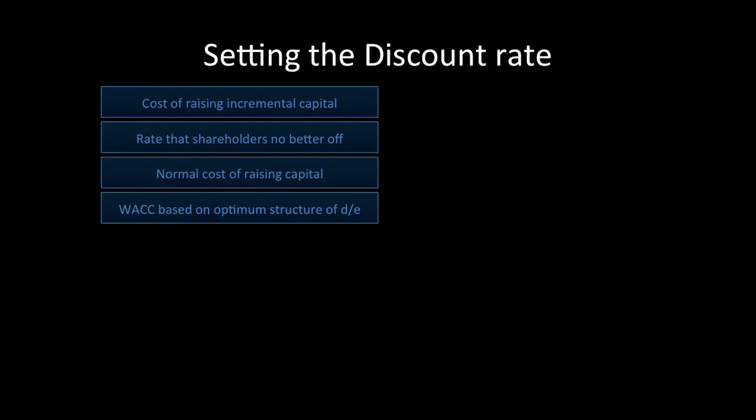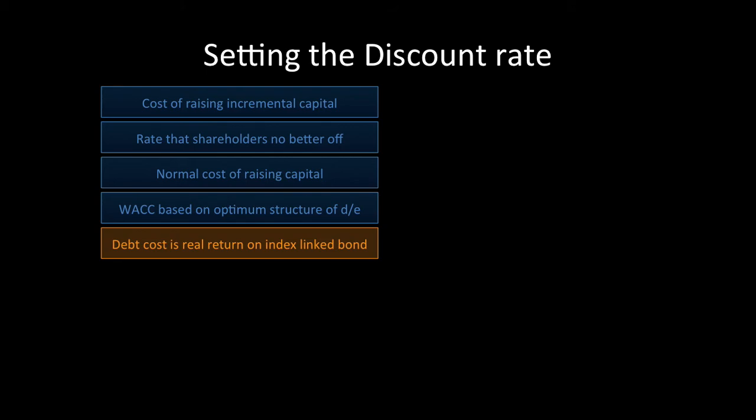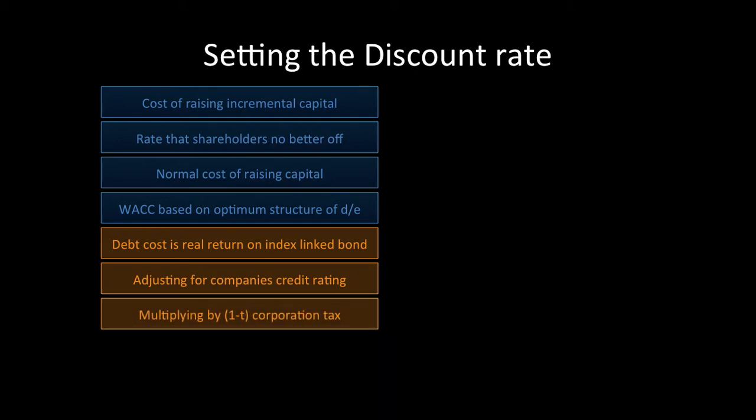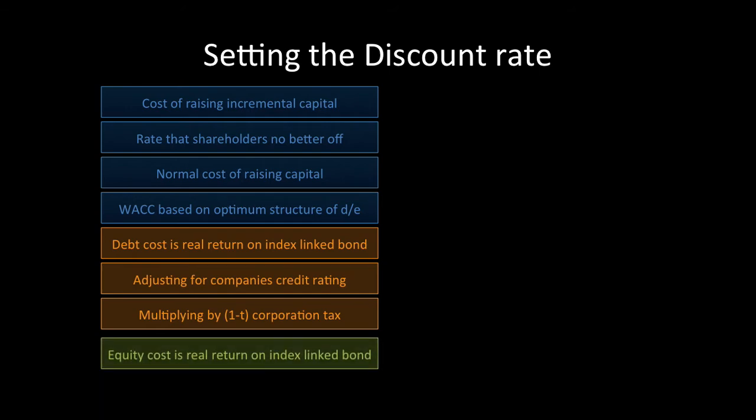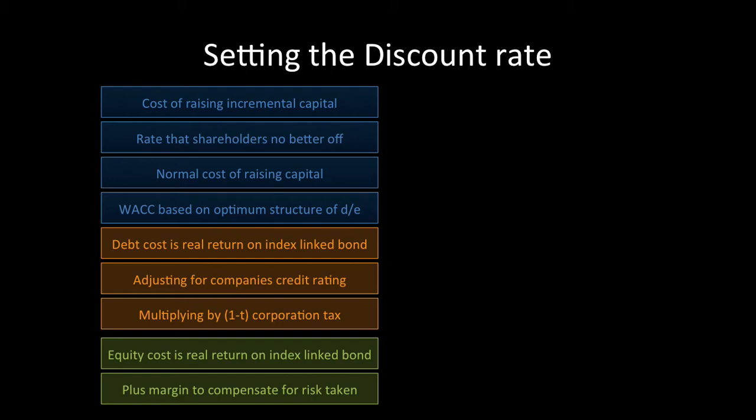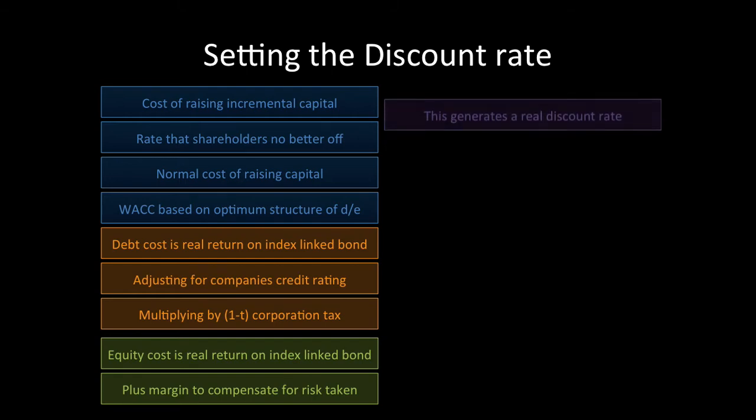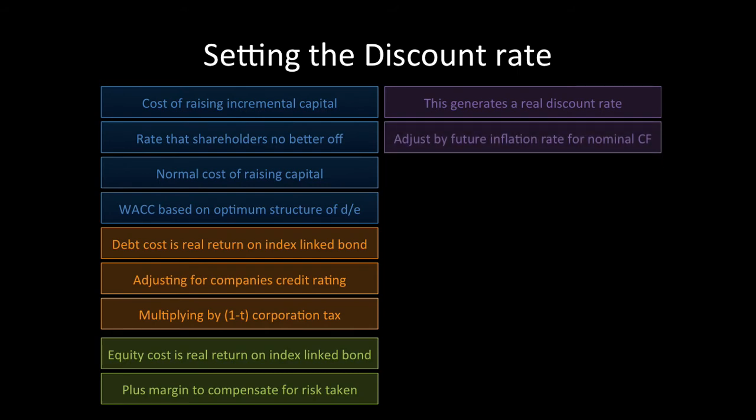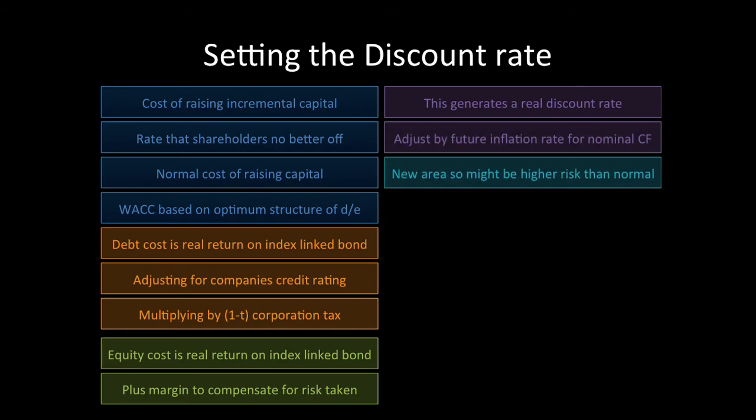The weighted average cost of capital is based on the optimum structure of debt and equity. Debt cost is the real return on index-linked bonds adjusted for companies' credit ratings, multiplying by one minus t, where t is the corporation tax. Equity cost is the real return on index-linked bonds plus a margin to compensate for the risk taken. This generates a real discount rate. We adjust by future inflation rate for nominal cash flows. If it's a new area, we might have a rate a little bit higher than the normal.